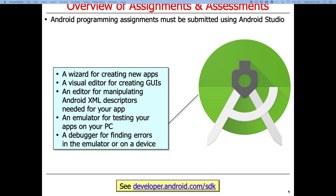Android Studio is a very mature IDE with lots of great features: wizards for new apps, visual editors for GUIs, XML layout manipulation, an emulator for running apps on your PC, and a debugger. It's all based on IntelliJ, a popular IDE for Java and other languages from JetBrains. You'll need to install the Java 8 runtime environment — instructions are on the GitHub repository — otherwise the functional programming features won't work.